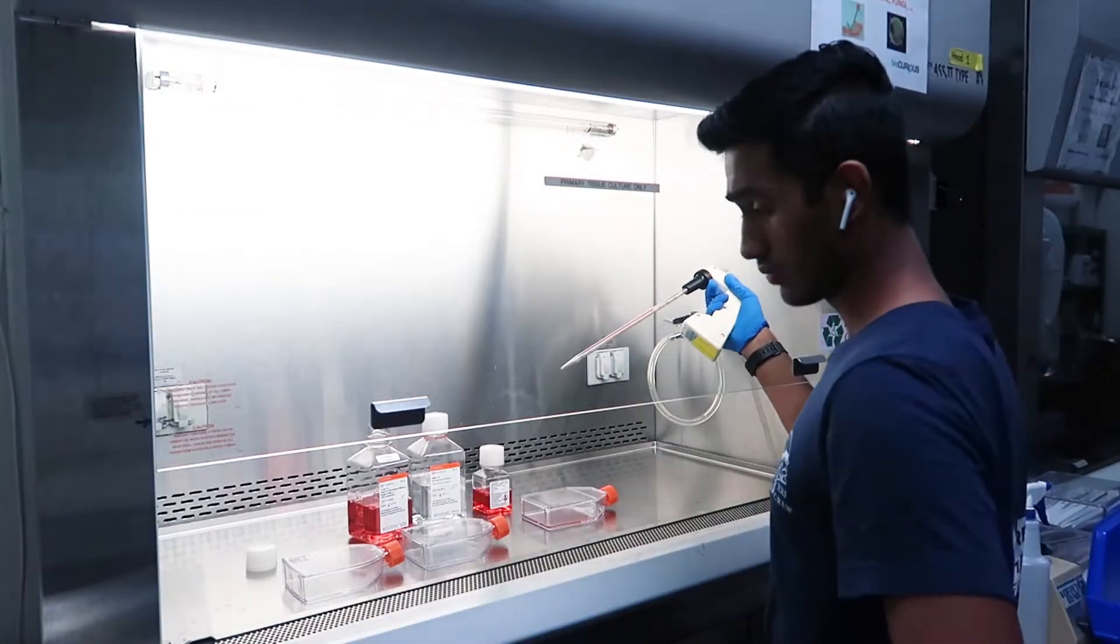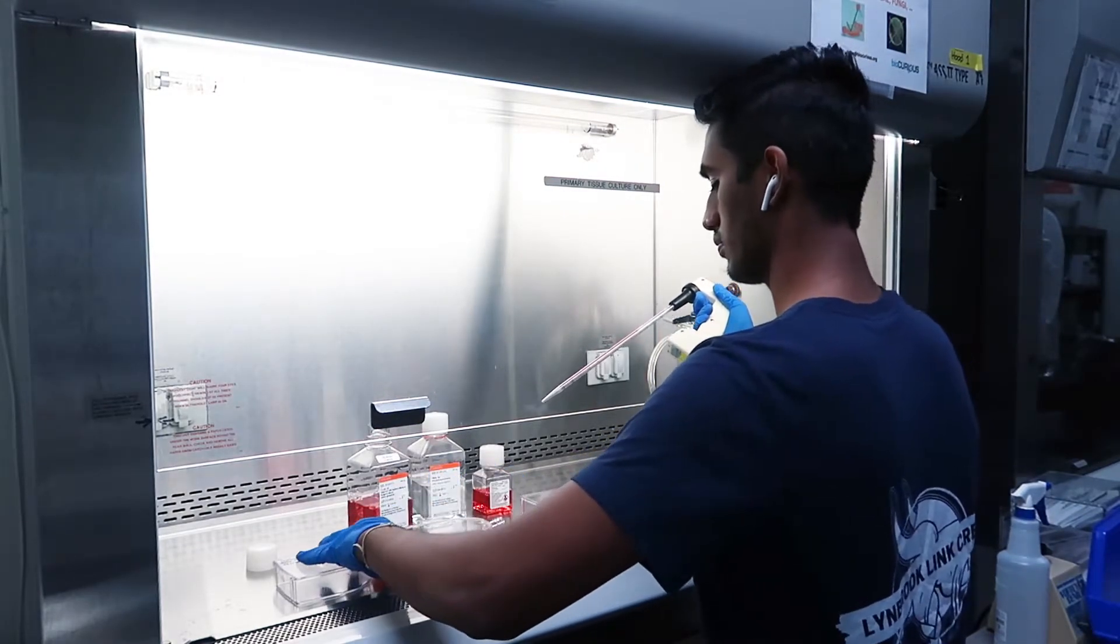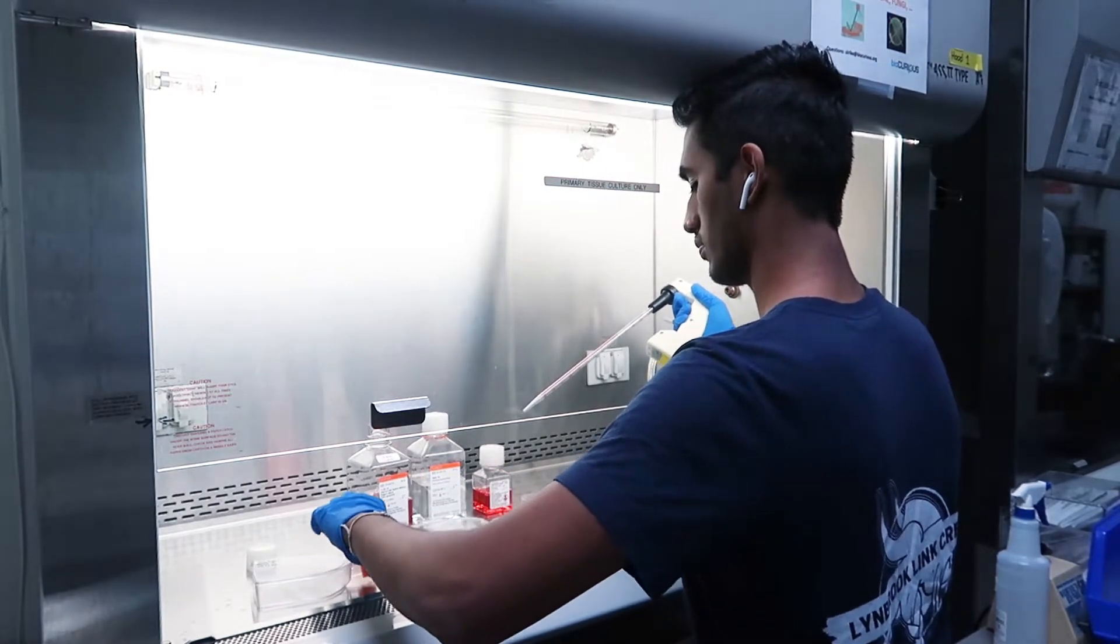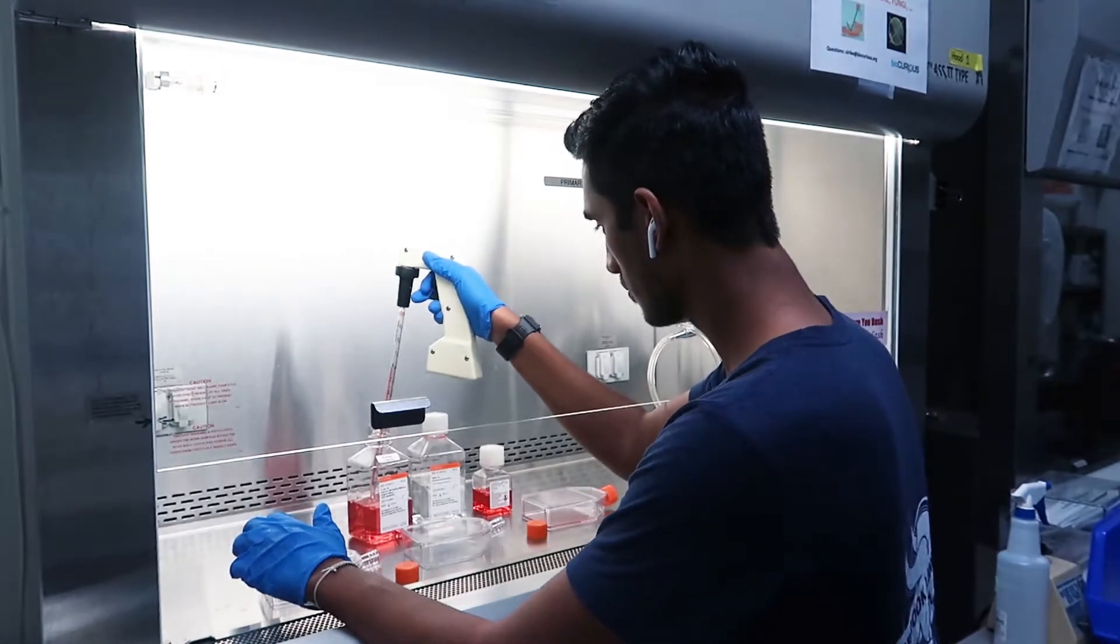Now that you have a single suspension, you want to prepare two new culture flasks. What we're going to do here is add 15 milliliters of your medium to the two new TC75 flasks.